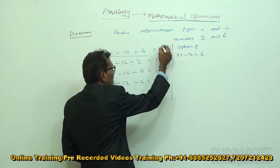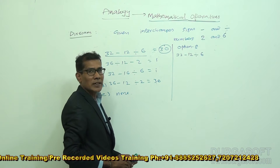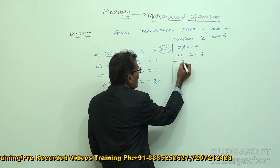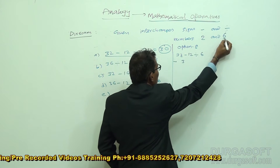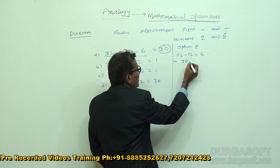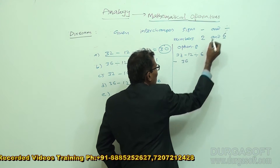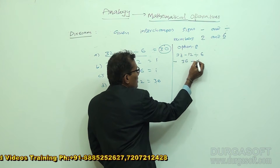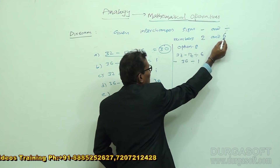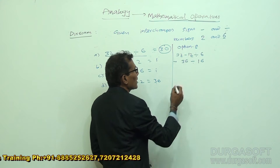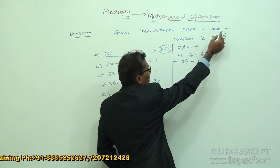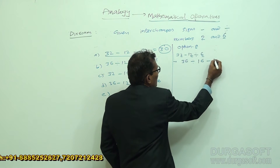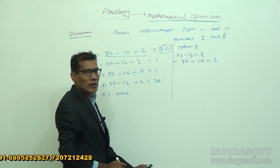The result should be 30 after interchanging the signs and interchanging the numbers. Here, 3 stays as it is; 2 should be changed to 6, so it becomes 36. The minus should be changed to divided-by. In 12, we write 1 as it is but 2 should be replaced by 6, giving 16. The divided-by should be replaced by minus, and the 6 should be replaced by 2. So the expression becomes 36 divided by 16 minus 2.